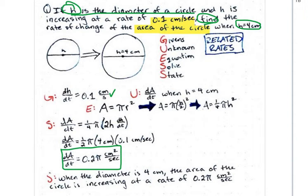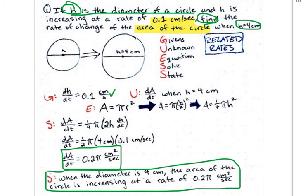So we go ahead, and in our final step, we state our answer as we can see right here. So we state that when the diameter is 4 centimeters, the area of the circle is increasing. Why is it increasing? Because this answer is positive. If it was negative, we would say it's decreasing, but it's increasing at a rate of 0.2 pi centimeters squared.